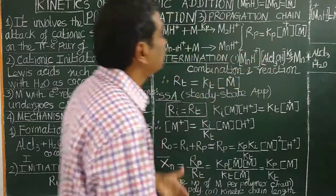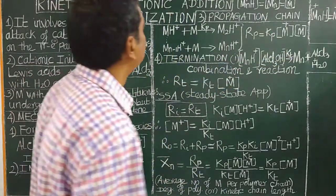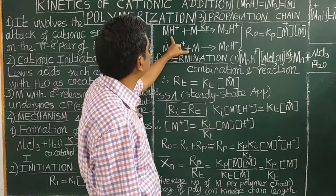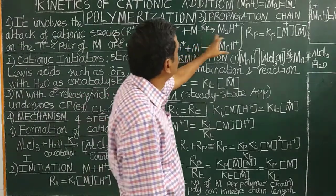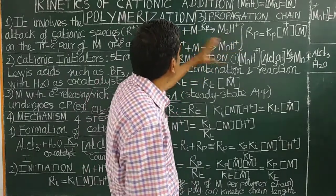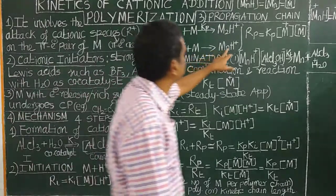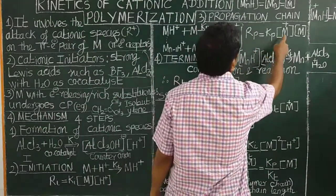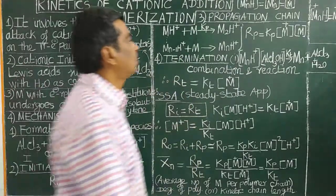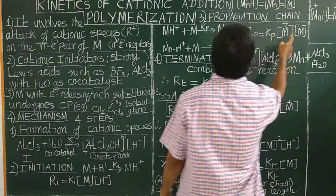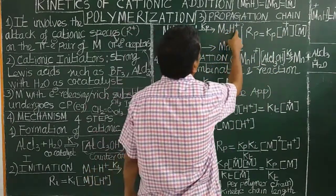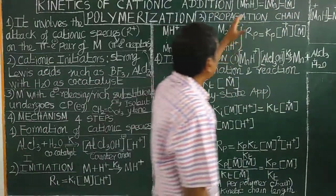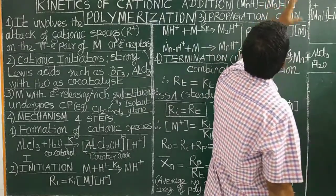The third step is the chain propagation step. M1H+ will attack another monomer to give M2H+. This M2H+ will further react, similar to M1H+, attacking more monomer. The rate of propagation is Rp = Kp × [M+] × [M], where Kp is the propagation rate constant.